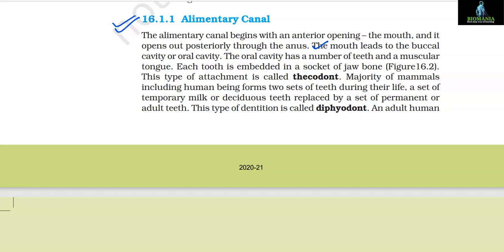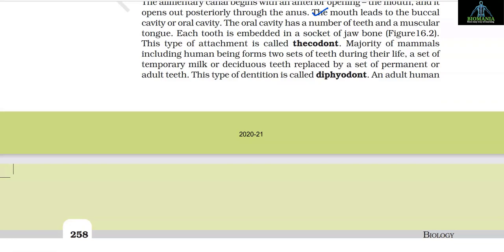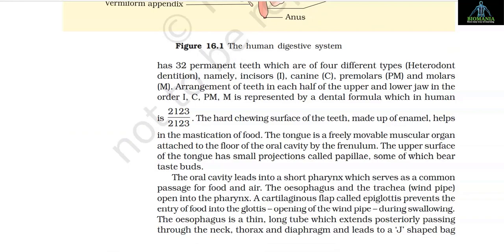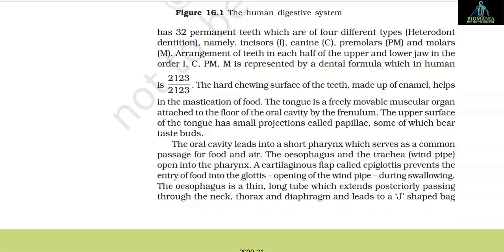Each tooth is embedded in a socket of jawbone; this type of attachment is called thecodont. Majority of mammals including human beings form two sets of teeth during their life: a set of temporary milk or deciduous teeth replaced by a set of permanent or adult teeth. This type of dentition is called diphyodont. An adult human has 32 permanent teeth which are of four types — heterodont dentition — namely incisors, canine, premolars and molars. The arrangement of teeth in each half of the upper and lower jaw in the order I, C, PM, M is represented by the dental formula, which in humans is 2123/2123.